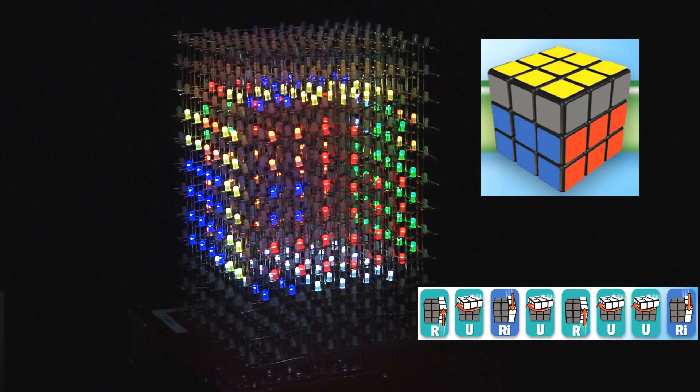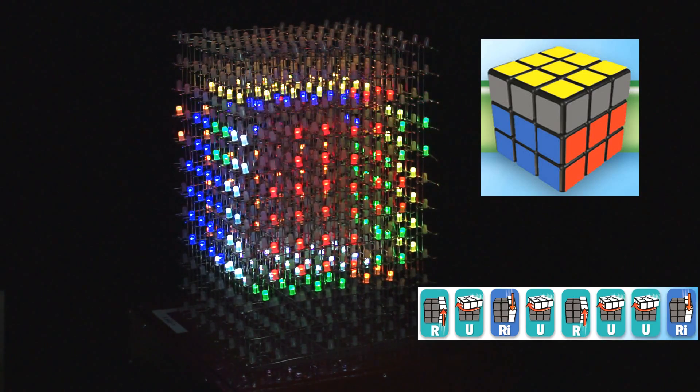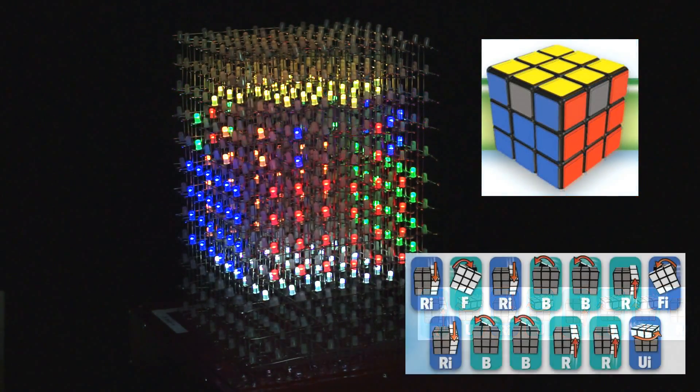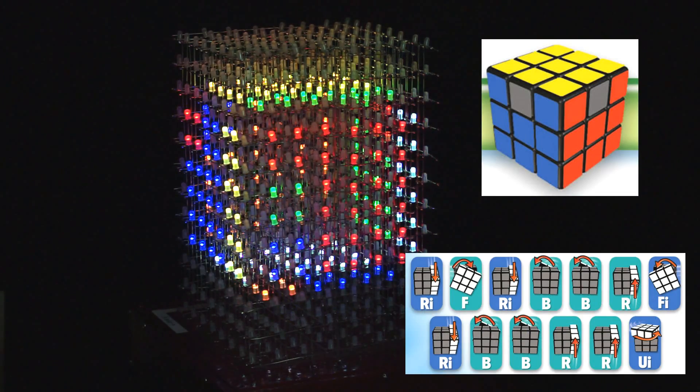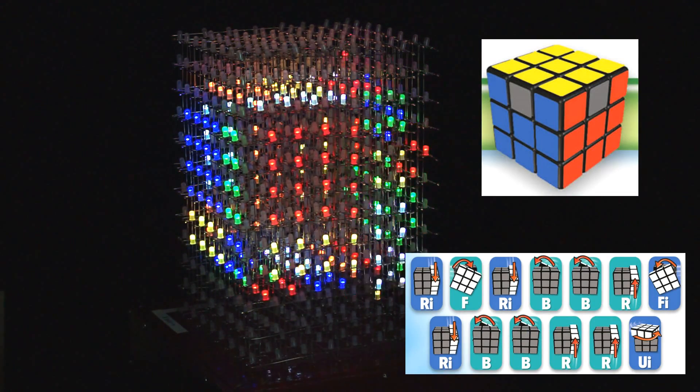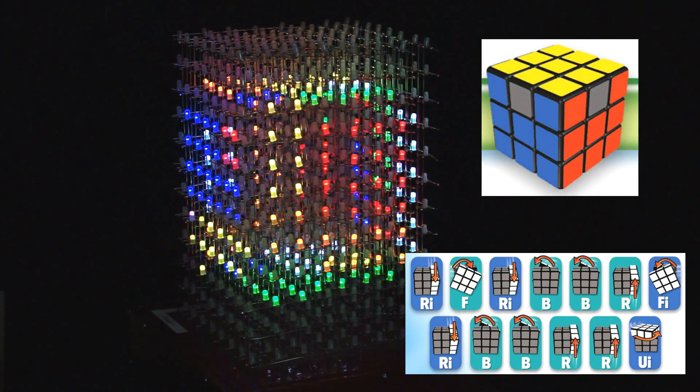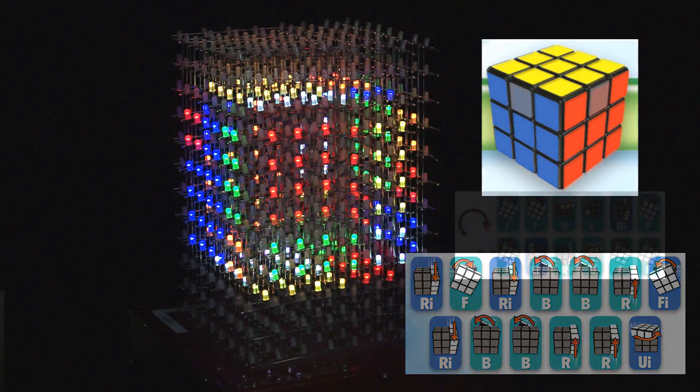So after you get your cross, you want to get your full face on top. Once you get your full face on top, we can do the corner pieces. And of course, finally, after the corner pieces, we need to fill in the edge pieces for the top.